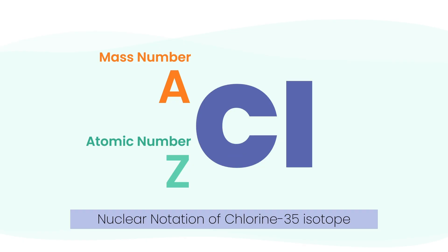Now let's apply this to chlorine. We replace X with Cl, the symbol for chlorine. Since chlorine always has 17 protons, we replace Z with 17, its atomic number.